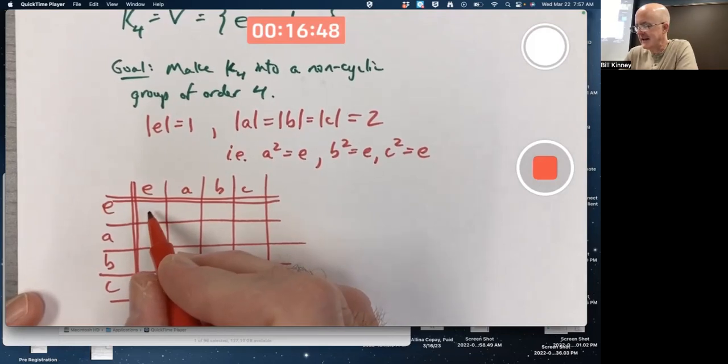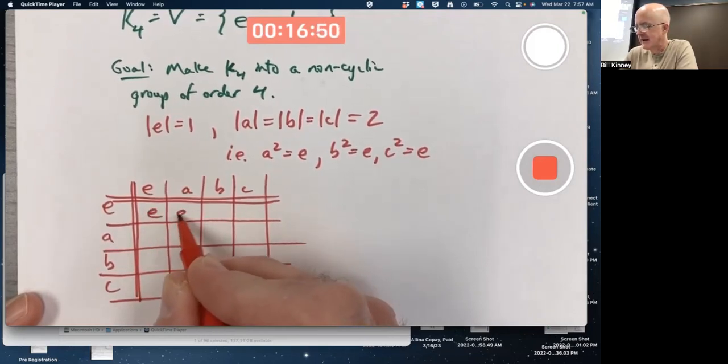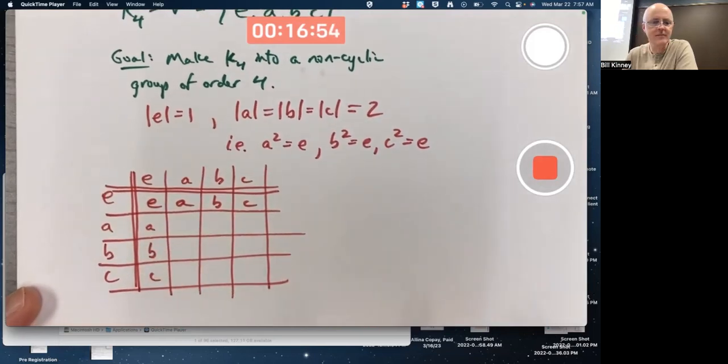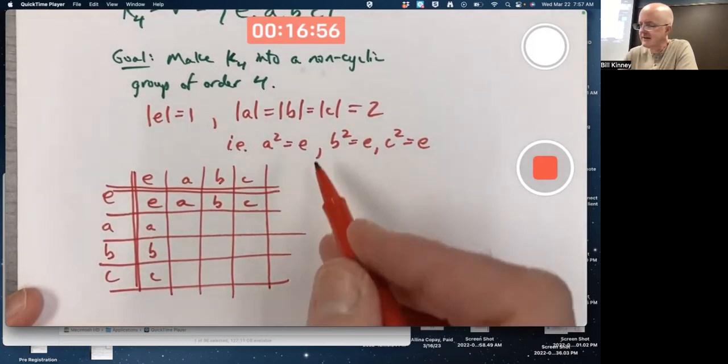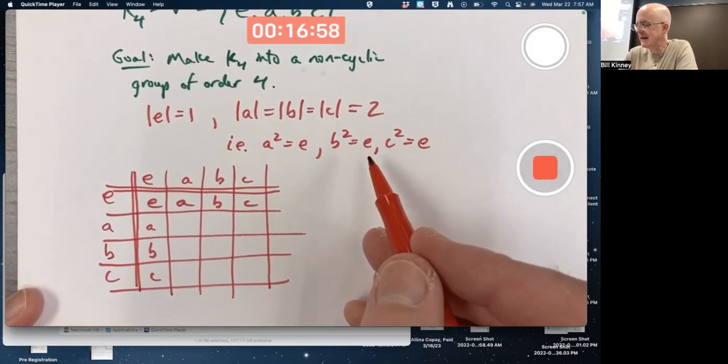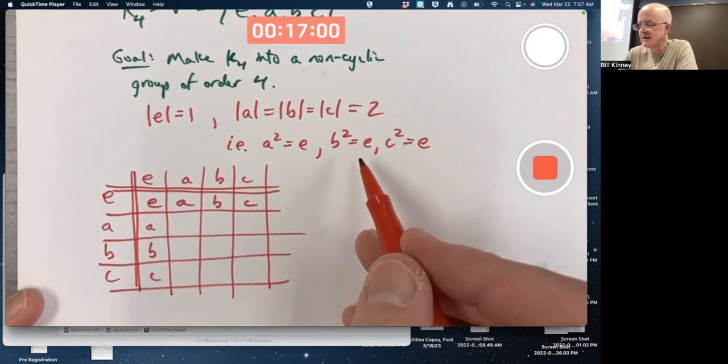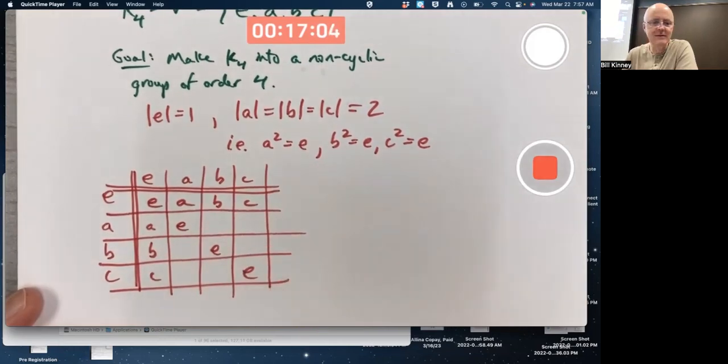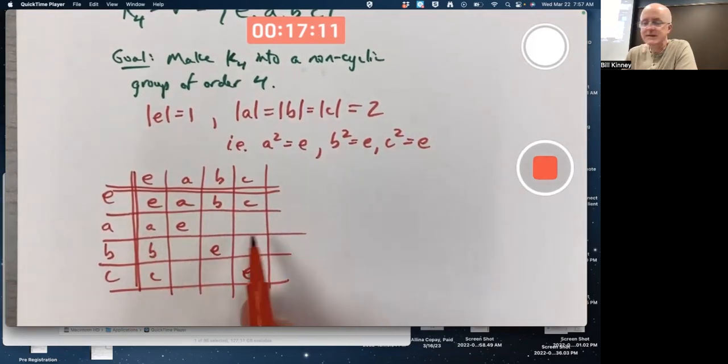I want E to be the identity, so I can quickly fill in this part of the table. And all the non-identity elements have order two. I've got E's along the main diagonal. Now let's fill in the rest.